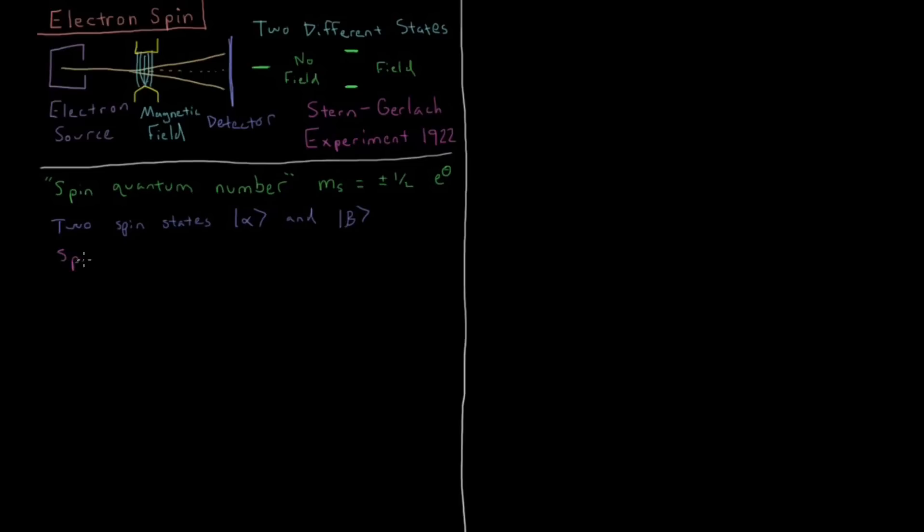And we have the spin operators, which are going to be analogous to the operators for l and m sub l for total angular momentum and the z component of angular momentum. These are going to be the s squared, the total spin angular momentum, and s z or the z component of the spin angular momentum. So what happens when these operators act on these two spin states here?